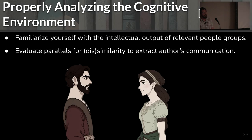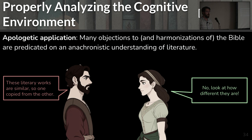To reconstruct that cognitive environment, you need to familiarize yourself with the cognitive output of the relevant people groups and then evaluate the parallels between the texts for similarity and dissimilarity to extract the author's communication. That's the basic idea. And here's the direct apologetics application.